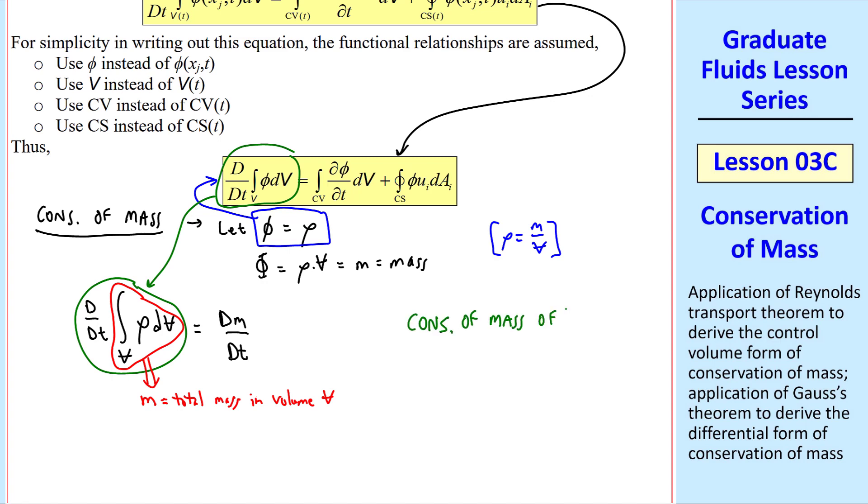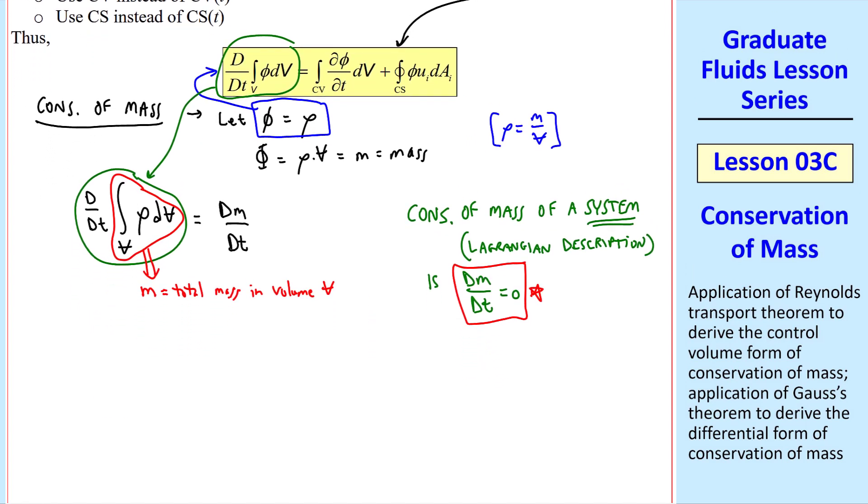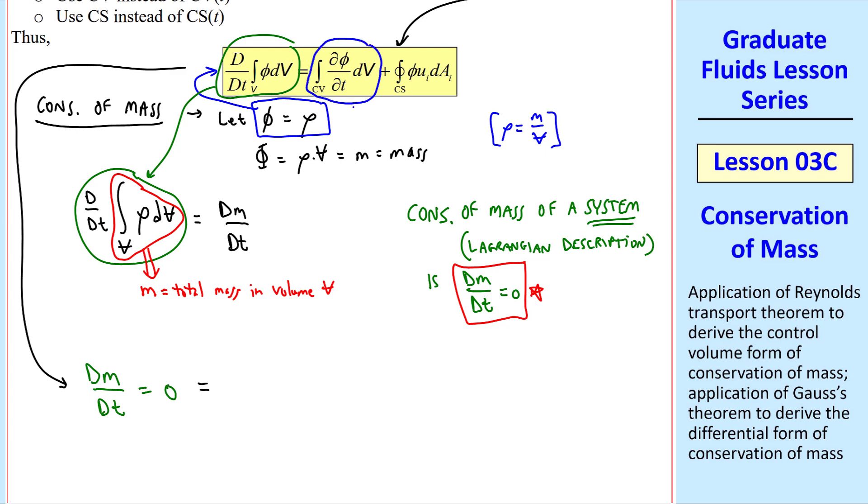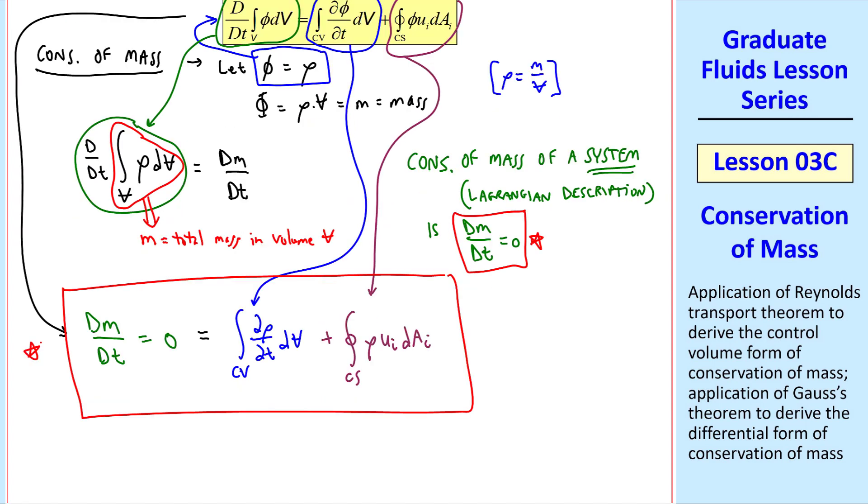But we know that conservation of mass of a system in the Lagrangian description is dm/dt equals 0. This is by definition of a system, since no mass can enter or leave a system, even if that system is moving along or distorting or expanding. Thus, we write out our equation as dm/dt equals 0, and then the unsteady term, where we have set phi equal to rho in this equation, plus the surface integral, which becomes rho ui dai. This is our conservation of mass equation.